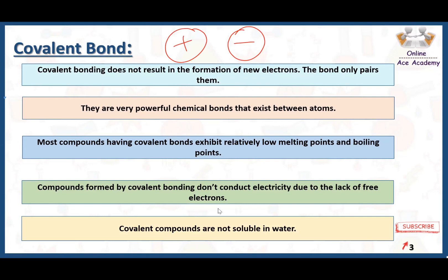Covalent compounds are not soluble in water for the same reason — any compound that is soluble in water is soluble because it breaks down into ions. For example, NaCl has Na⁺ and Cl⁻, which is why it can dissolve in water. But in the case of covalent compounds, they are unable to dissolve in water because they don't have any ions — no cations and no anions.